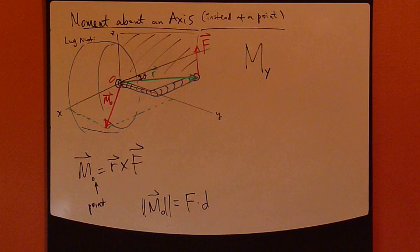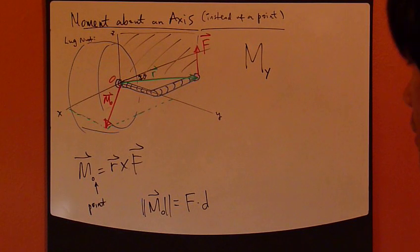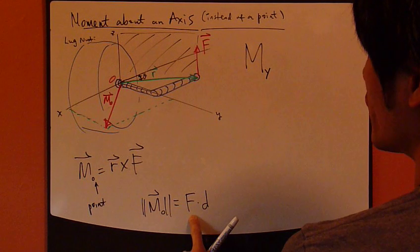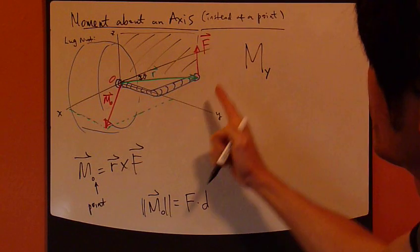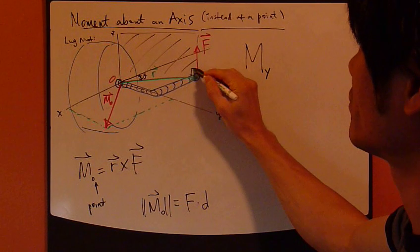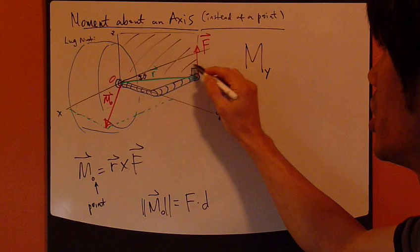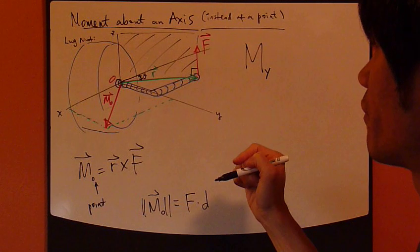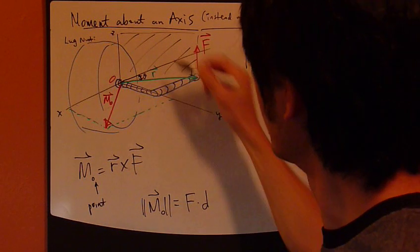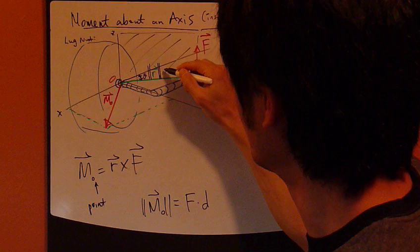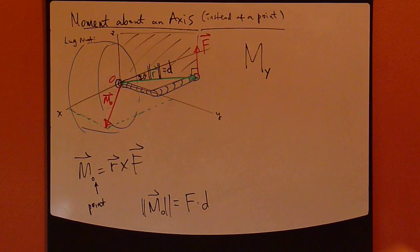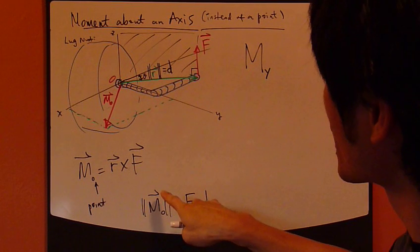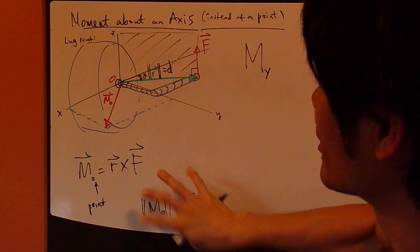The magnitude of force times D, where D is the shortest distance between point O and F. In this particular example, I apply my force F straight up, which so happens to be perpendicular to this R vector. So D is exactly the magnitude of R in this case. So this is the moment about this point O.